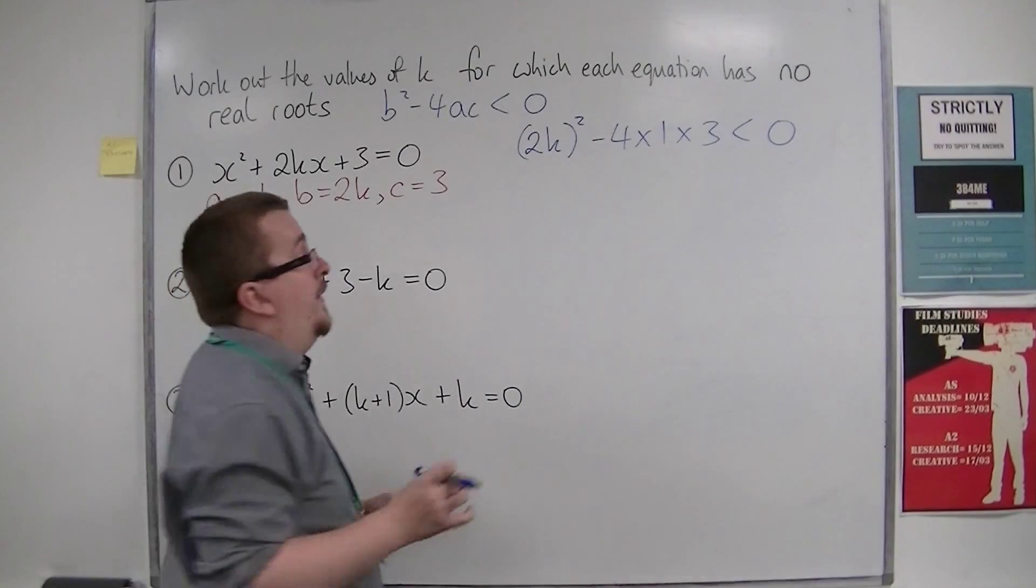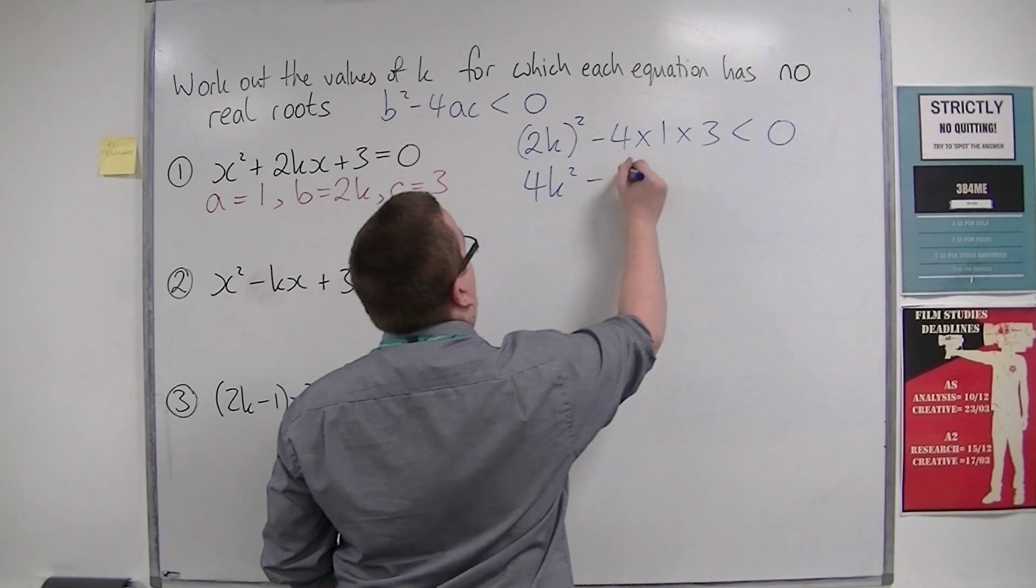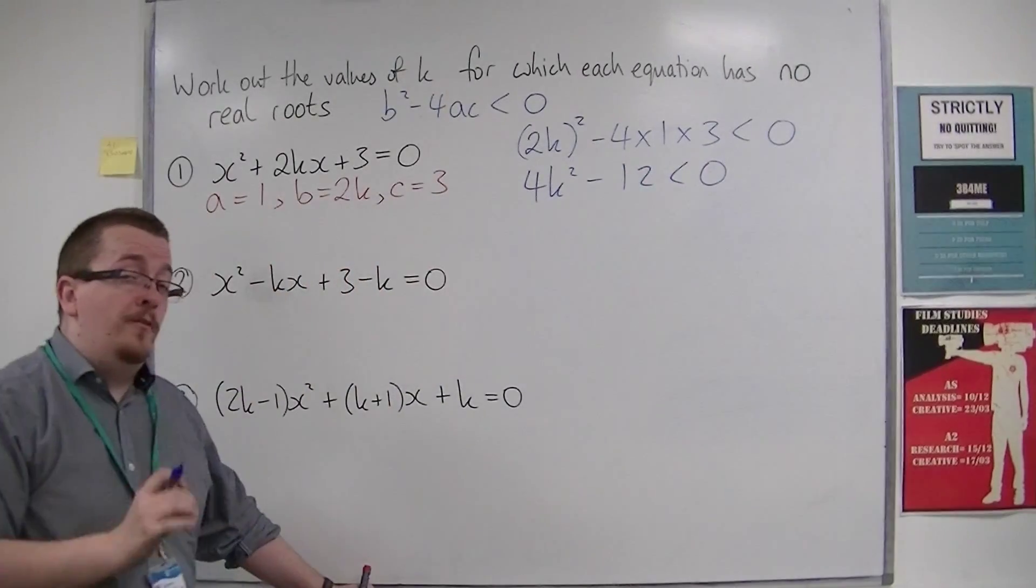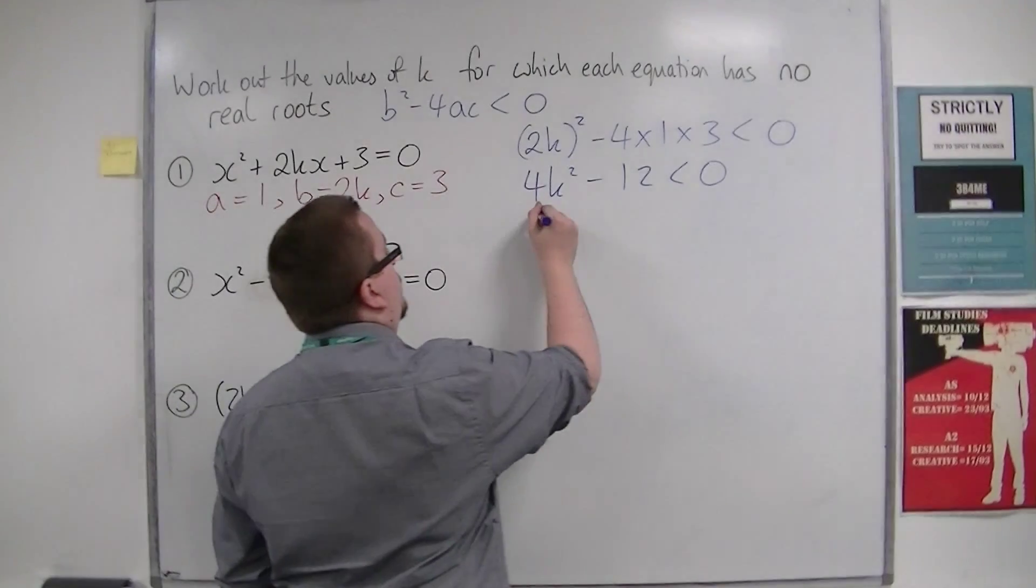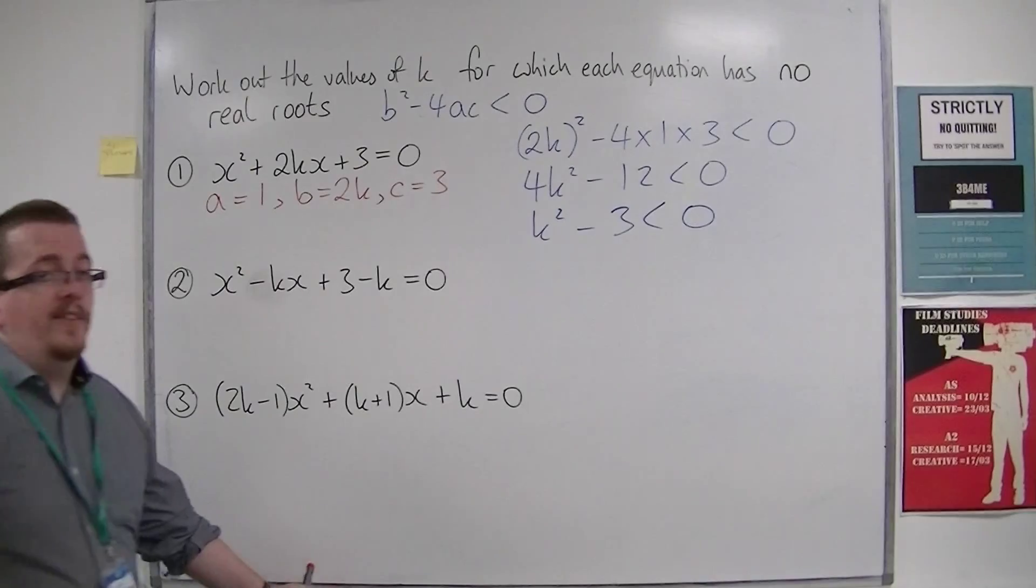Let's tidy this up. We'd have 4k² - 12 < 0. We can simplify that by dividing through by 4, so k² - 3 < 0.